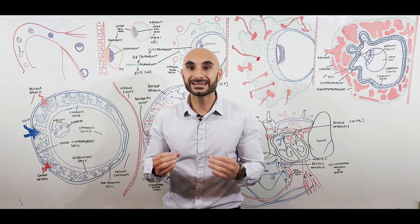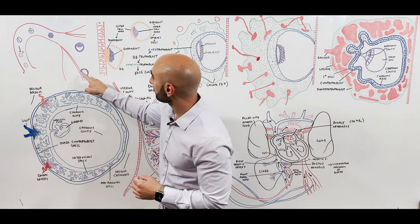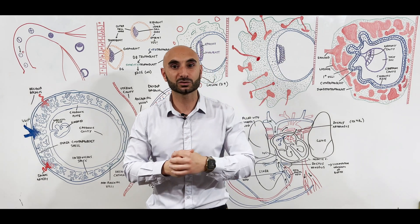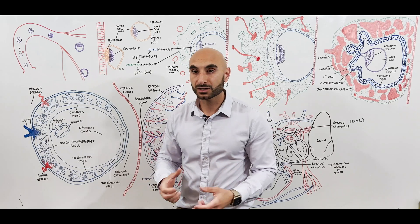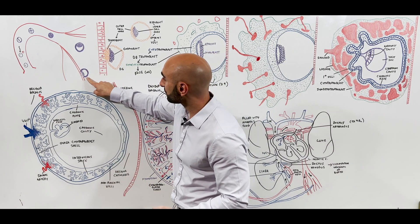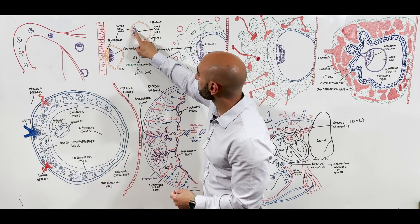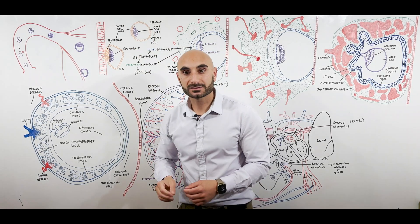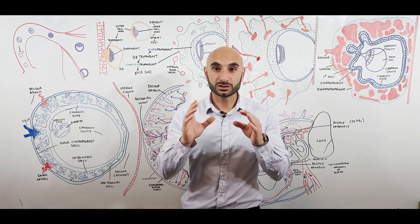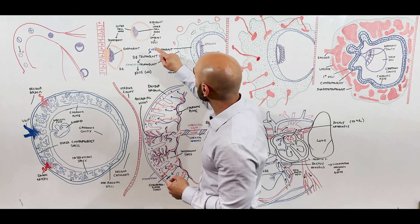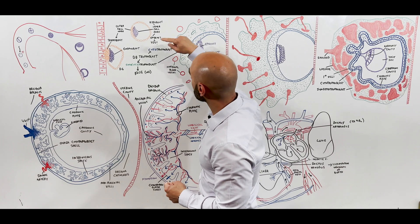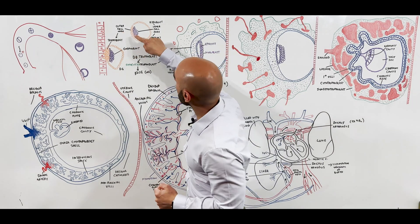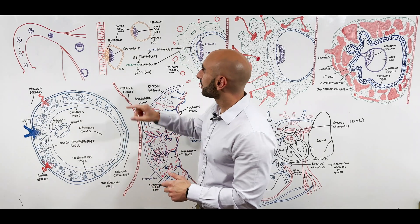The development of the placenta begins at implantation. We've discussed this in more detail in the introduction to embryology video. What's important for this video is that the blastula implanting into the uterine wall contains both an inner cell mass in purple and an outer cell mass in orange. The inner cell mass has two parts — an epiblast and a hypoblast. Importantly, let's focus on the outer cell mass, which is the trophoblast.